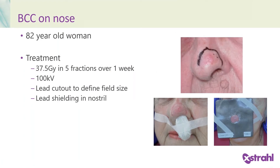This first case was an 82-year-old lady. She was treated with 37.5 Gy in five fractions over one week, using 100 kV photons. You can see there was a simple lead cutout — a previously used cutout to define the field size, which is around two to two-and-a-half centimetres. There was also lead shielding in the nostril to protect the inside of the nose.